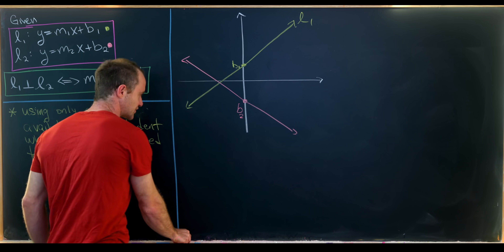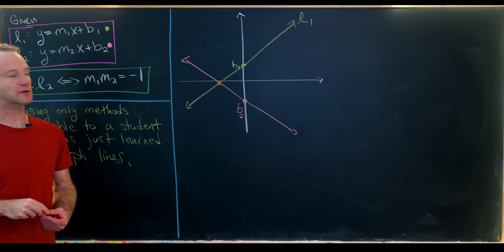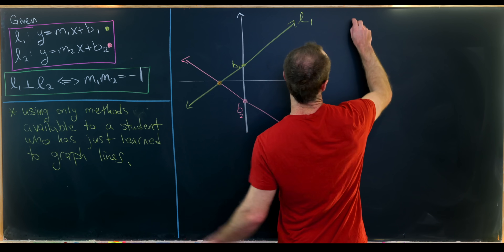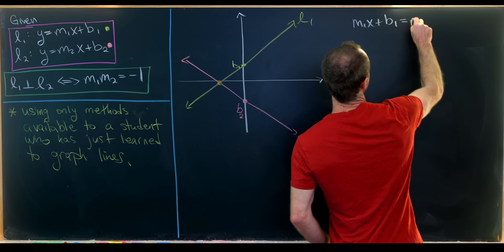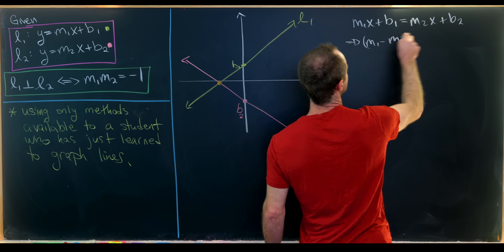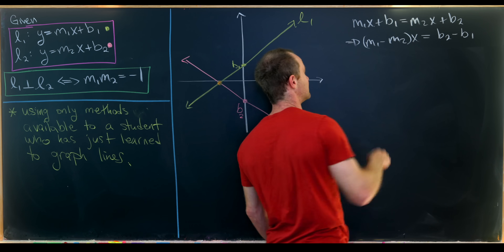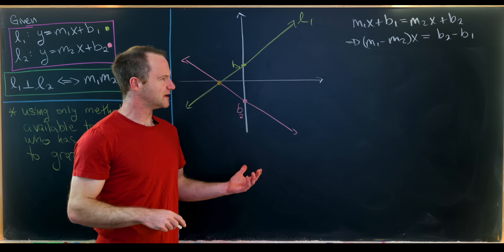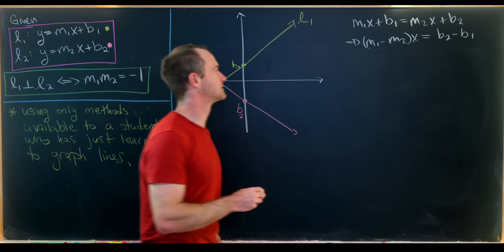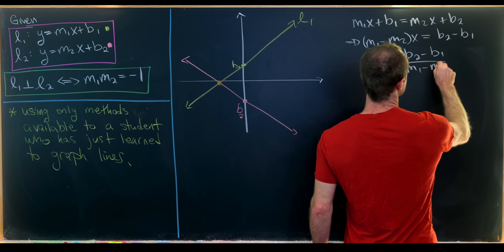The first thing we'll do is find the intersection point, which will be expressed in terms of m1, m2, b1, and b2. So let's find when m1x plus b1 equals m2x plus b2. That's equivalent to saying (m1 minus m2) times x equals b2 minus b1. We can divide by m1 minus m2 — which we can do because we're assuming these lines are not parallel, so they intersect — giving us an x-value of (b2 minus b1) over (m1 minus m2).